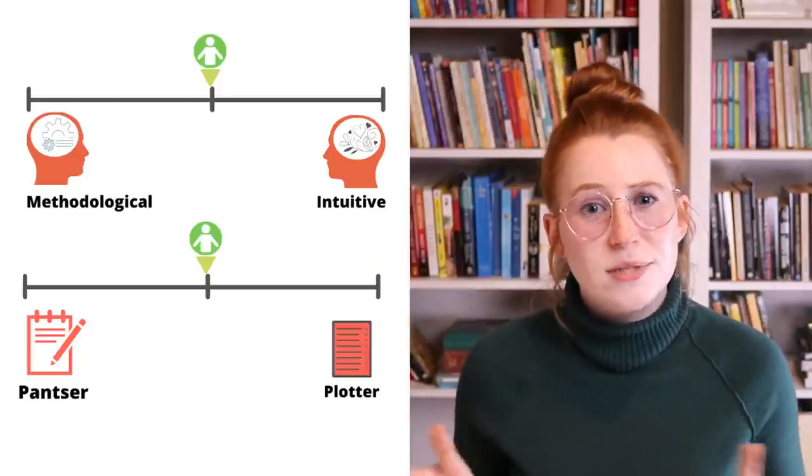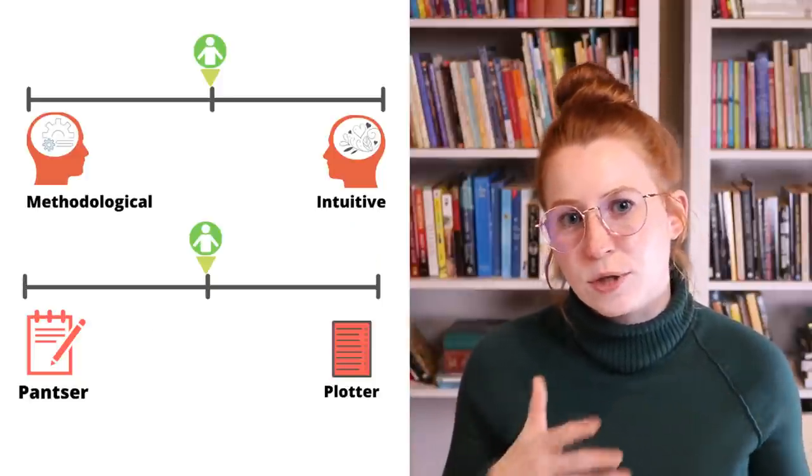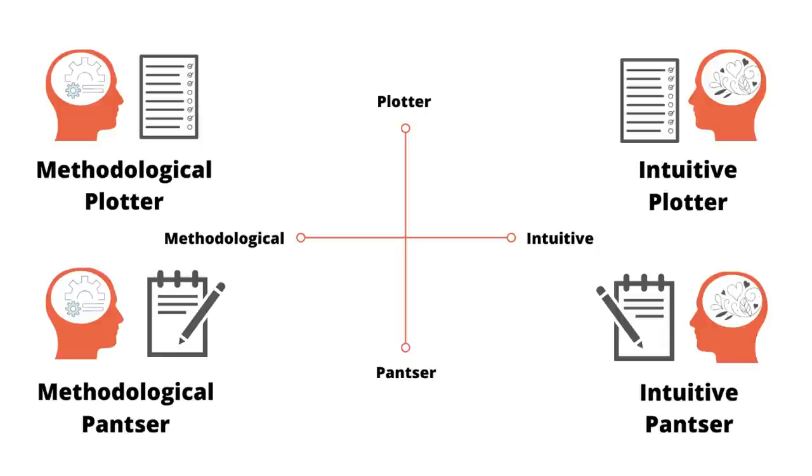So those are the two continuums and that's where we get the four types: methodological pantser, methodological plotter, intuitive pantser, and intuitive plotter. Because this is built on two continuums, it's possible that you'll sit sort of evenly between two types — you could even sit right at the center of all four types — so you might need to take a mix-and-match approach to the tips in this video series.